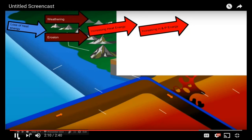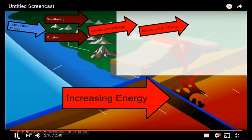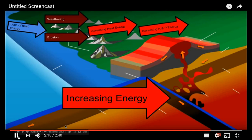This is where you're going to have another type of energy source where intense heat will melt the rock through increasing energy into magma. That magma is lighter than the crust, so it will start to rise. And as it rises, it pushes its way up, causing a volcano to form.